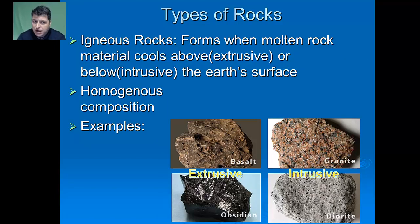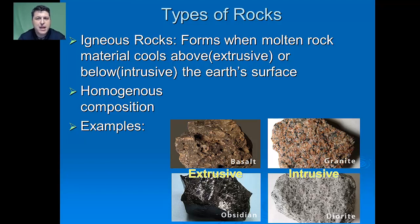Igneous rocks form when pre-existing rock completely melts and becomes molten, then cools either above or below the Earth's surface. Rocks that cool below the surface are called intrusive igneous rocks, characterized by large crystal sizes. Their visual appearance shows individual crystals interlocked together. The cooling of magma deep in the Earth is typically much slower, allowing larger crystals to grow.